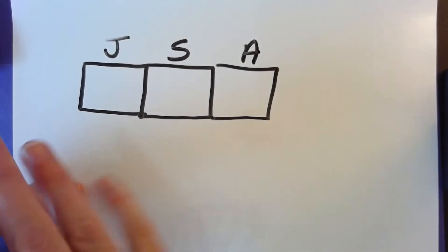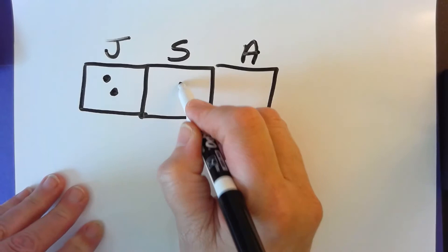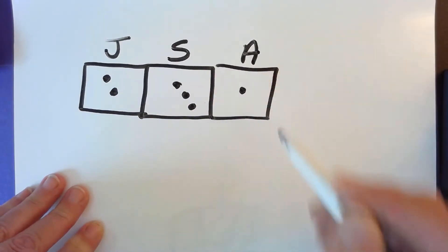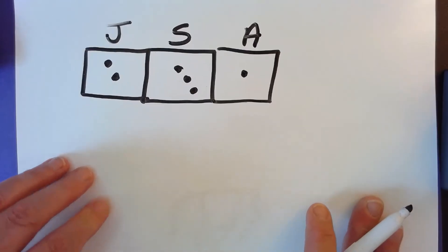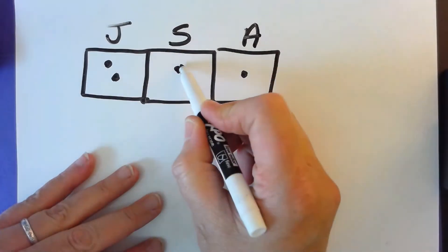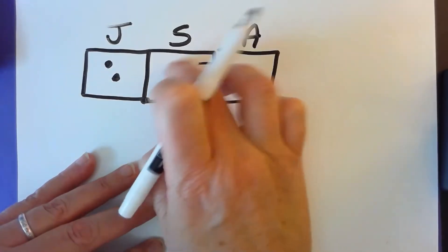Okay, so Jane has two apples, Sam has three apples, and Ann has one apple. Notice how these are not equal groups. We need to get these so they're equal groups. So what we're going to do is we're going to move one of the apples and put it in Ann's from Sam's bag.